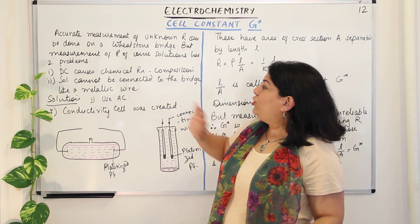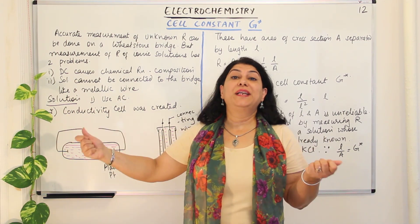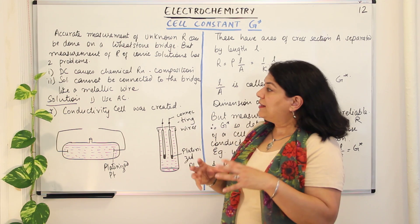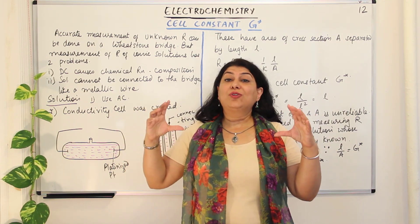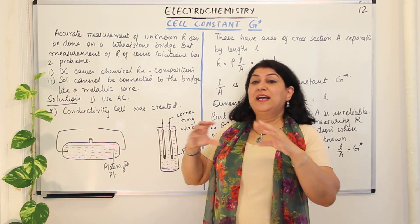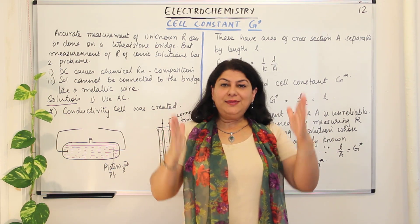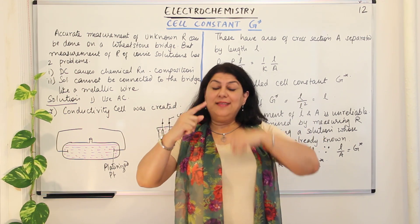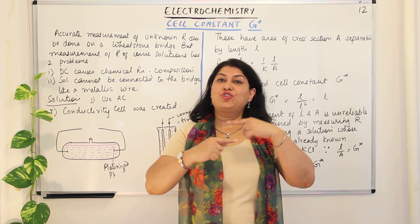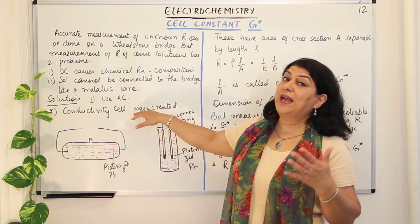The second problem was that the solution cannot be connected to the bridge like a metallic wire. The solution was to make a conductivity cell — a glass apparatus like a tube. With this conductivity cell, whose length and area of cross section are known, the distance between the two electrodes becomes the length of the conductor and the area of cross section of the vessel becomes the area, since the liquid acquires the shape of the vessel. Therefore the area of cross section and distance between electrodes act as the length and area needed to calculate the resistance.